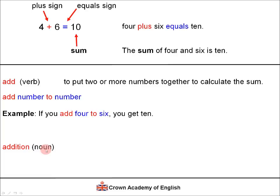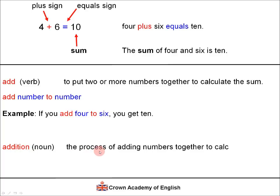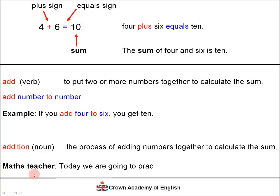And we have a noun derived from the verb add, and the noun is addition. Addition. The definition is the process of adding numbers together to calculate the sum — it's the noun which describes this operation. An example: the maths teacher says, today we are going to practice addition. So you have the verb, the noun, and most importantly, how you say the operation. Remember: four plus six equals ten — plus and equals.